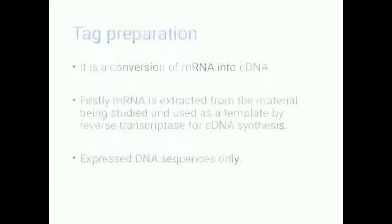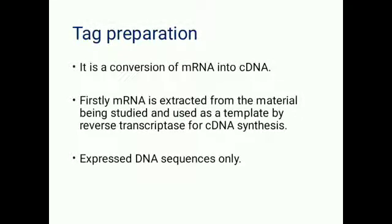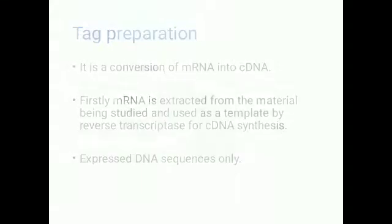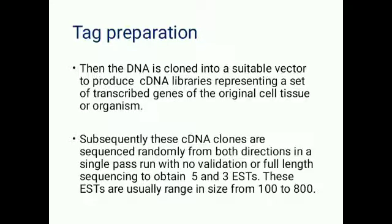Next, tag preparation. EST preparation involves the conversion of messenger RNA into cDNA. First, messenger RNA is extracted from the material and used as a template by reverse transcriptase for cDNA synthesis. The DNA is then cloned into a suitable vector to produce cDNA libraries representing a set of transcribed genes of the original cell, tissue, or organism. Subsequently, the cDNA clones are sequenced randomly from both directions in a single pass run, with no validation or full-length sequencing, to obtain 5' and 3' ESTs.